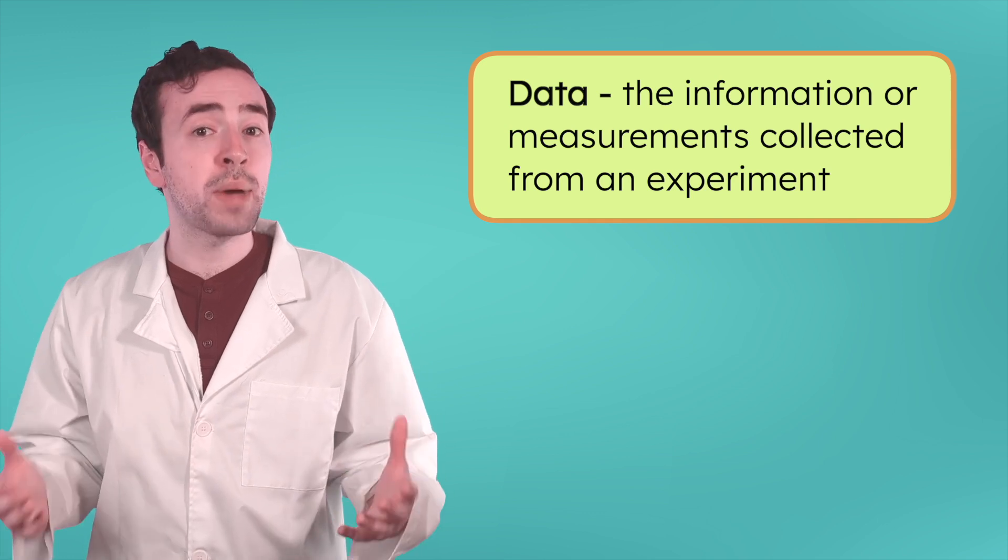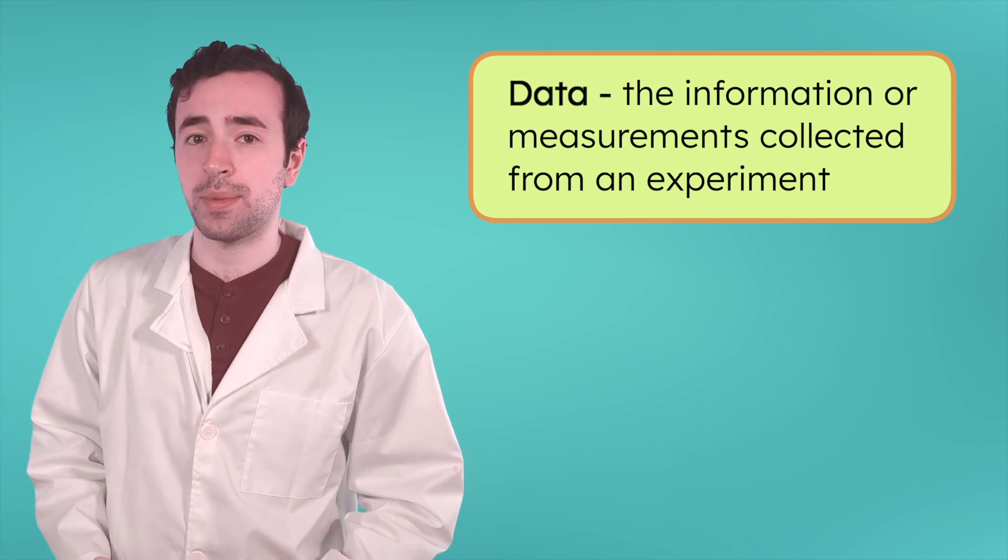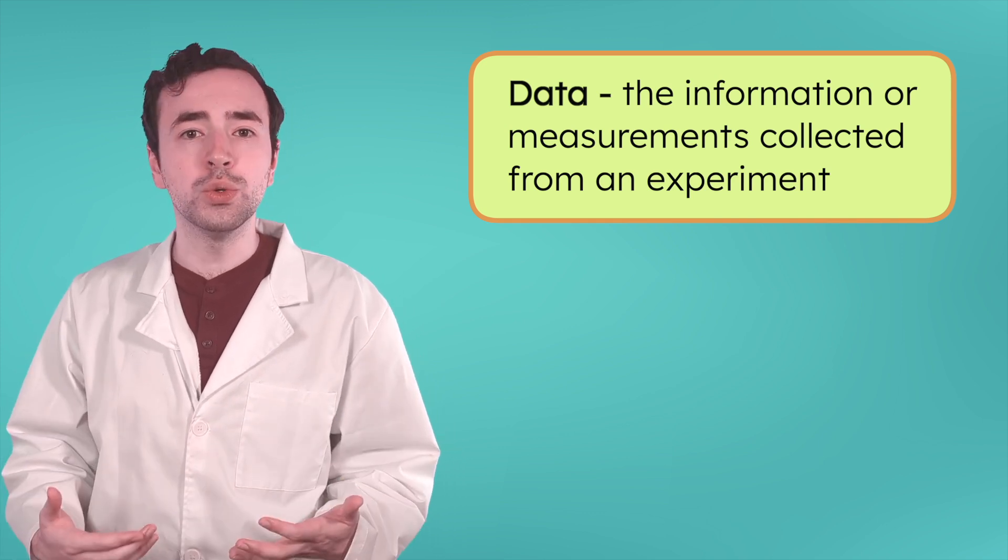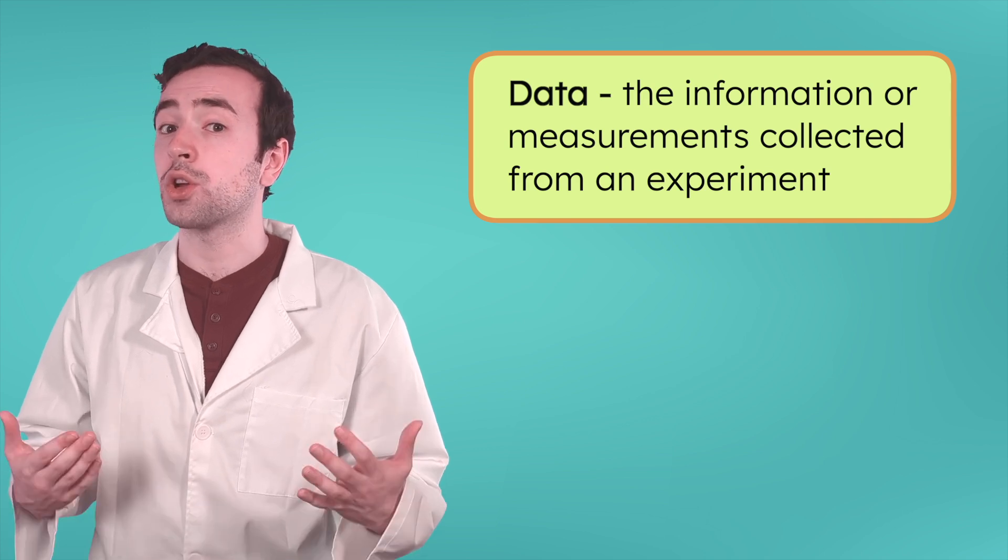We've got ourselves an experiment. The goal of an experiment is to collect evidence, just like a detective. The evidence shows whether our cause actually has the effect that we predicted. We call that evidence data. Data is the information, or measurements, collected from an experiment. It's what scientists use to decide if their hypothesis was correct or not.